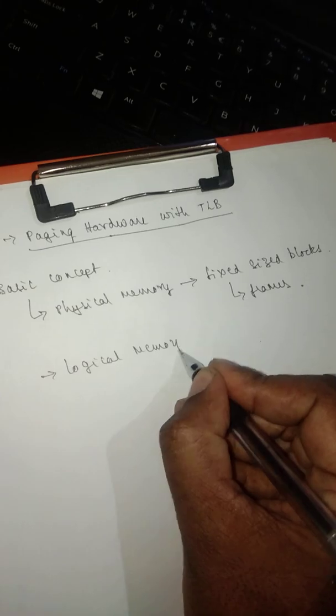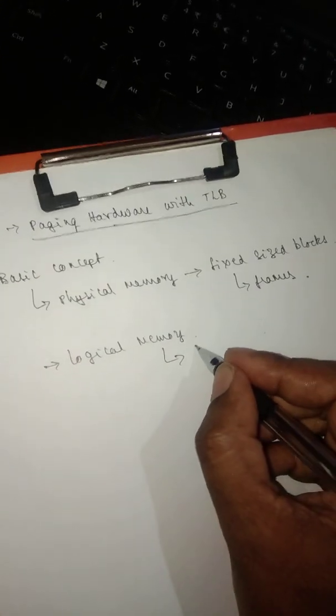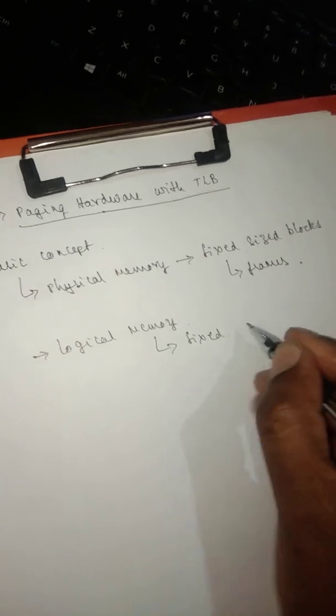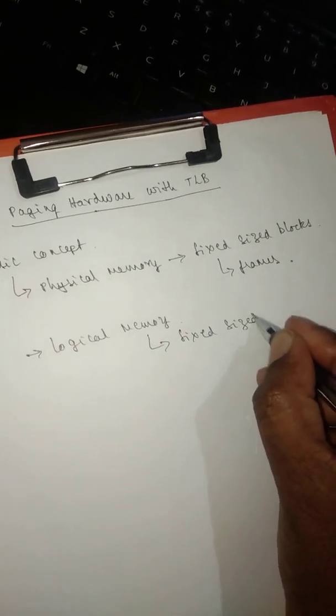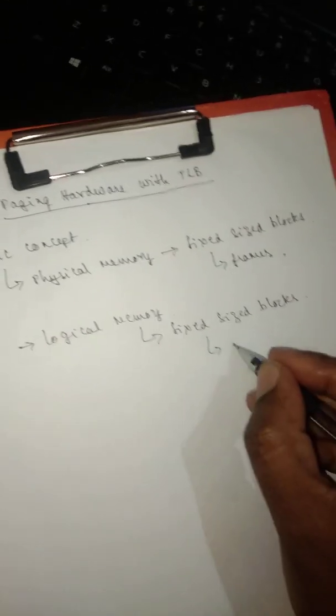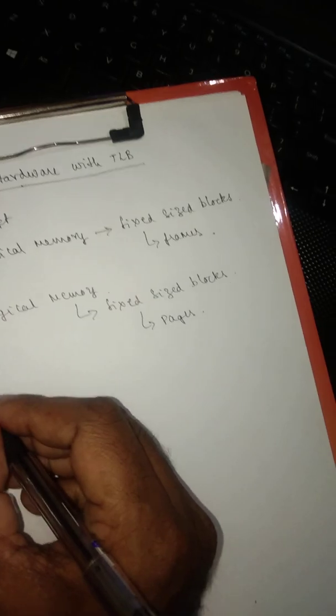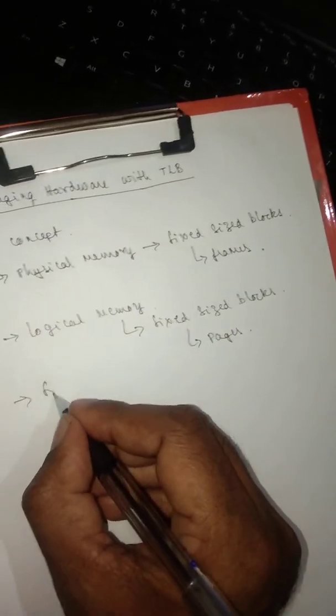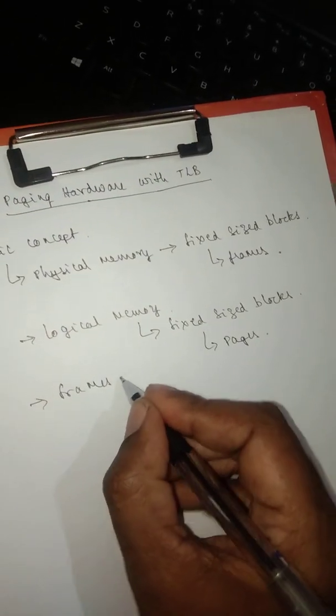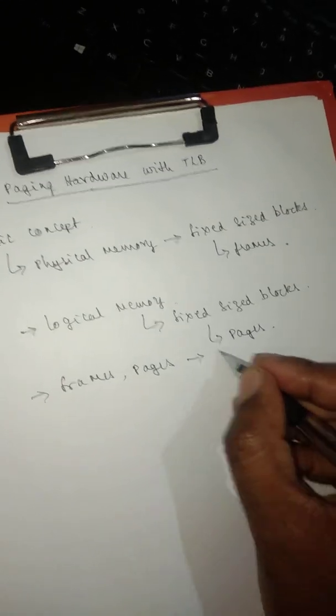Logical memory is again divided into fixed-size blocks called pages. Remember, frames and pages are of the same size.